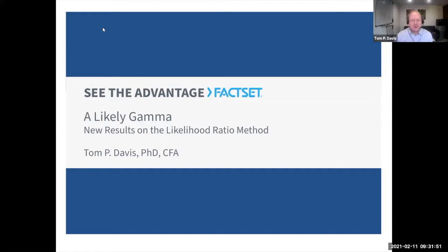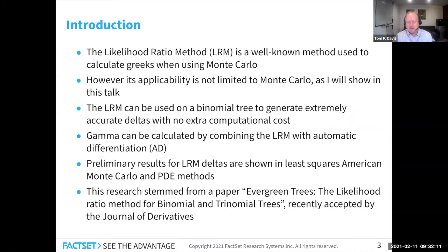Thanks for inviting me to talk — it's a real honor and pleasure to speak at NYU. I'm going to be talking about some research I've done recently on the likelihood ratio method, which is a well-known method, but I think its applicability is broader than maybe is known in the industry. All these research results stem from a paper just recently accepted to the Journal of Derivatives called 'Evergreen Trees,' where I give an alternative derivation of the binomial and trinomial trees and apply the likelihood ratio method on those to get efficient and accurate Greeks.